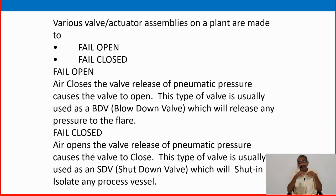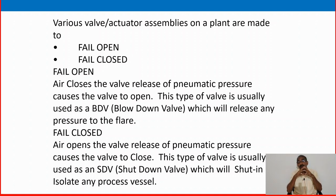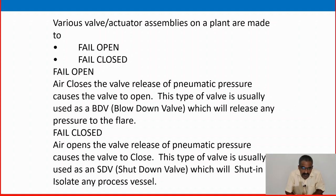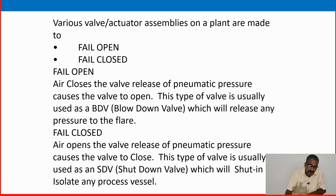The BDV works in the downstream or discharge area of a gas line to release the separator inside pressure or equipment inside pressure — the BDV is a fail-to-open valve working as a blow down valve, releasing gas pressure to flare or any other safe location. Fail closed: air opens the valve; release of pneumatic pressure causes the valve to close. This type is called SDV — shut down valve — which will shut in or isolate any process vessel.